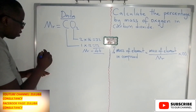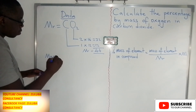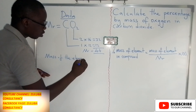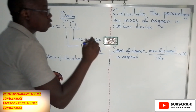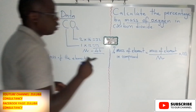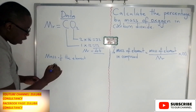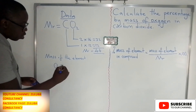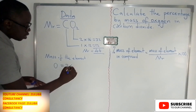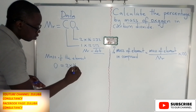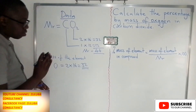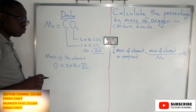Then let's get the mass of the element. The question has asked us to calculate the percentage of oxygen. The oxygen we have there — we have two atoms of oxygen. The relative atomic mass of oxygen is 16, so we get 32 as the mass of oxygen in this compound.